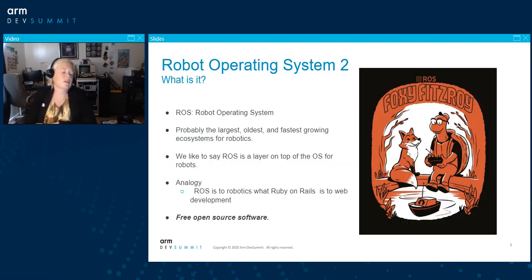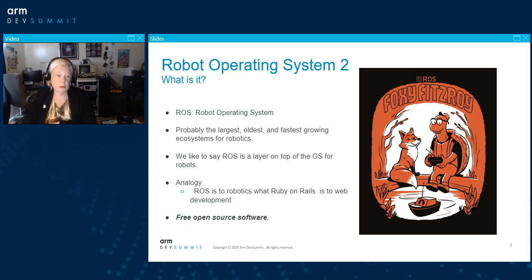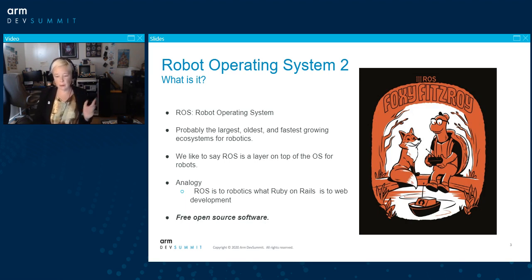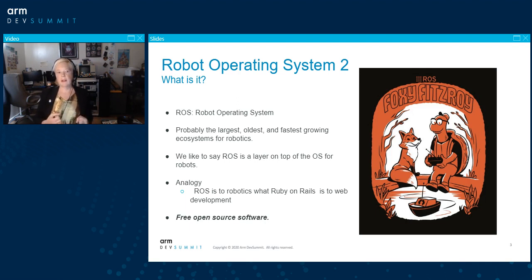So what is ROS — what is Robot Operating System? ROS is an acronym that stands for Robot Operating System. It's probably the largest, oldest, fastest-growing ecosystem for robotics. When I say oldest, I mean it's about 13 years old. When I say fastest growing, it's growing extremely quickly. And as far as I know, there's nothing that even compares to ROS in terms of the size of the community or the size of the code base. It really is the biggest, baddest, most wonderful thing for building a robot.